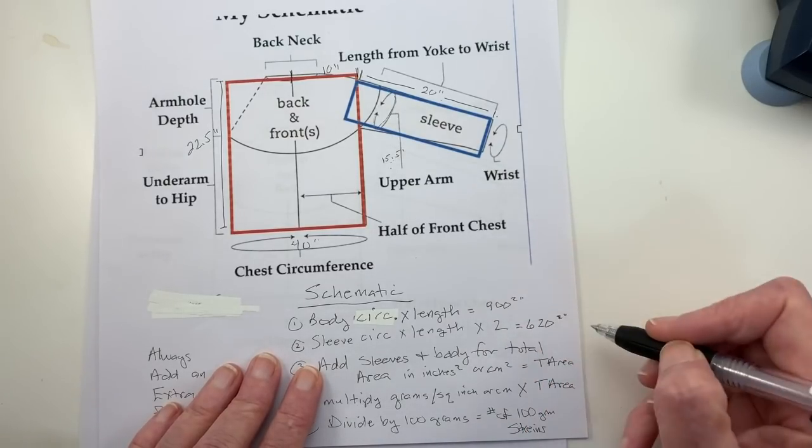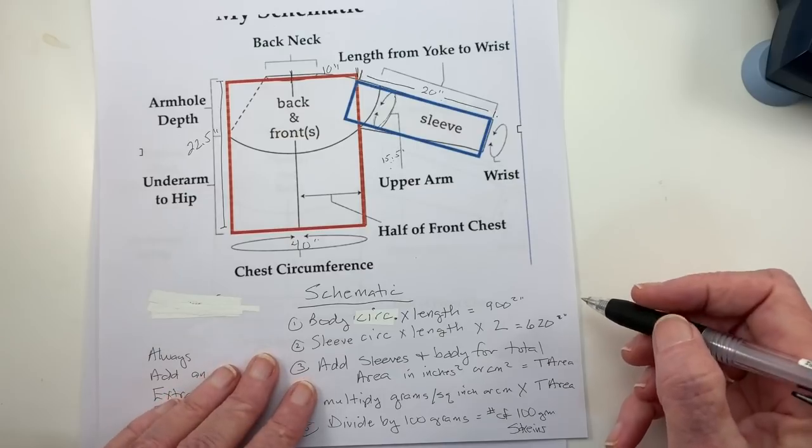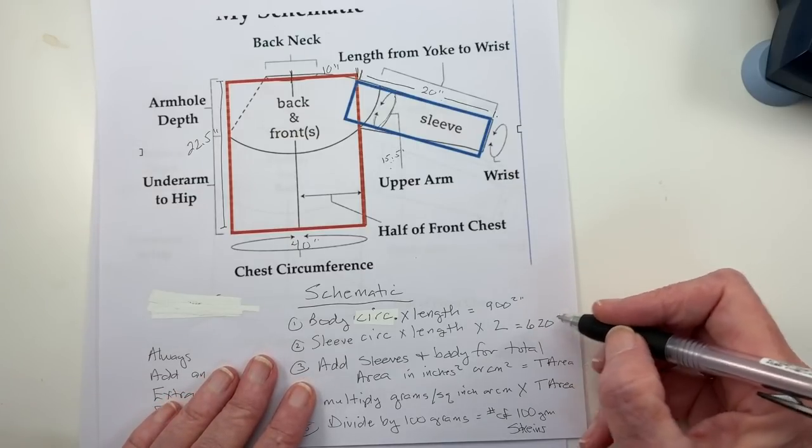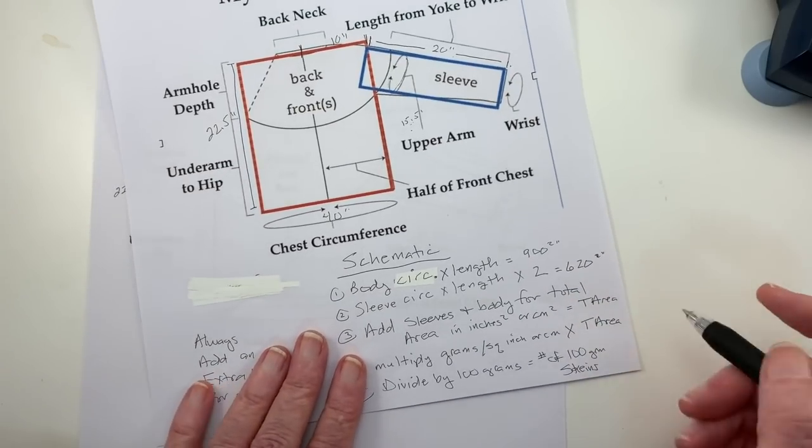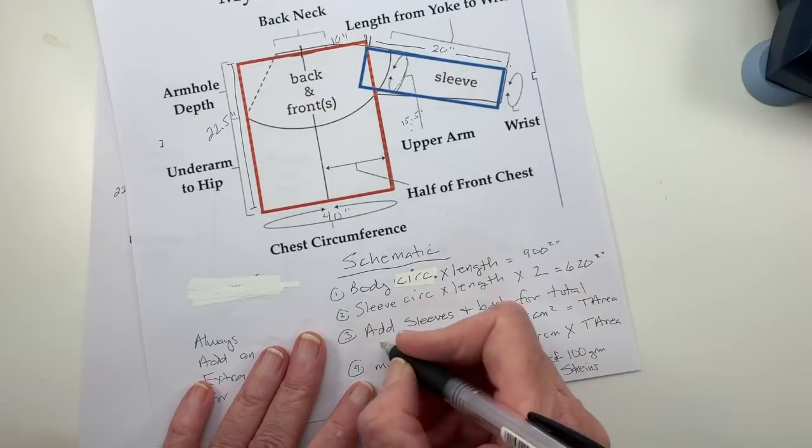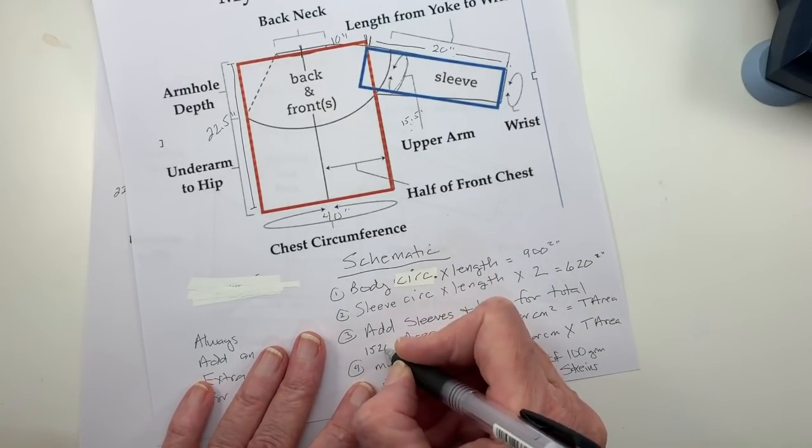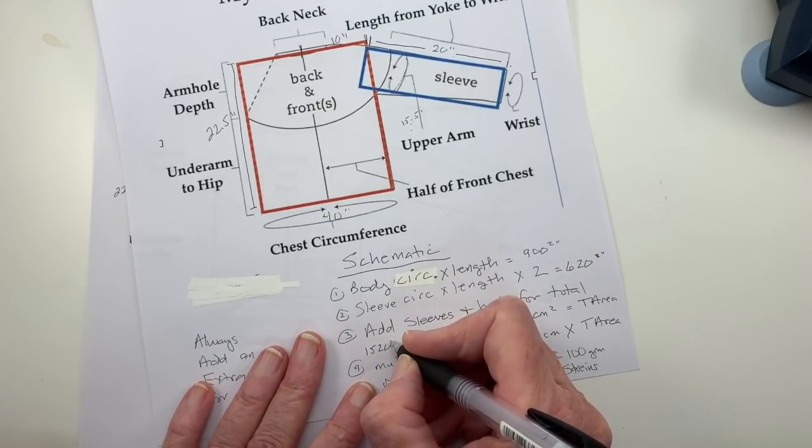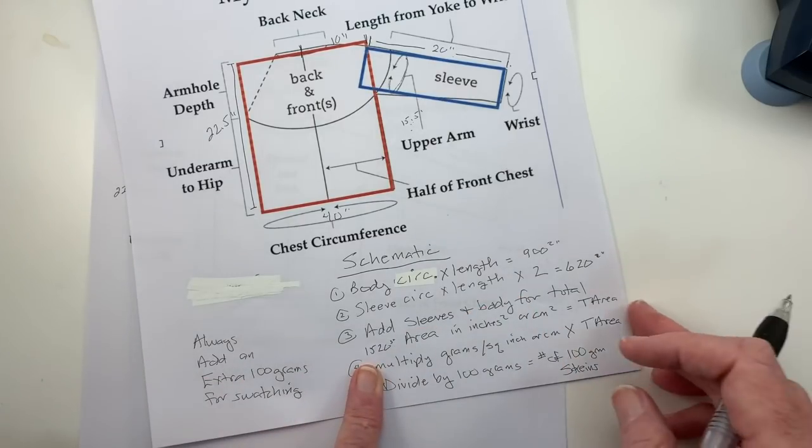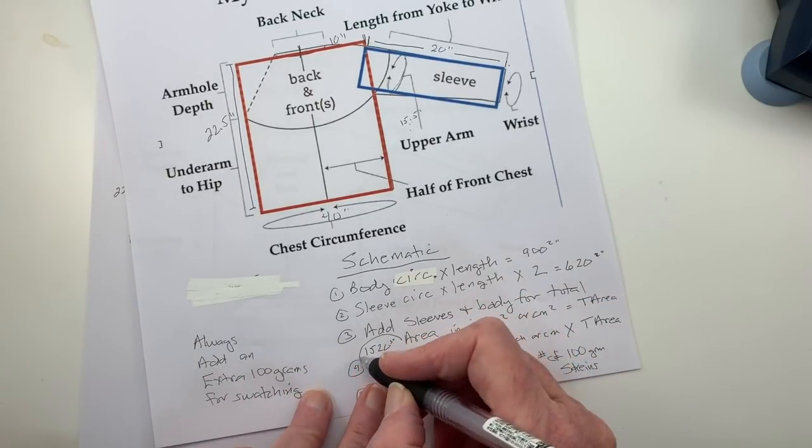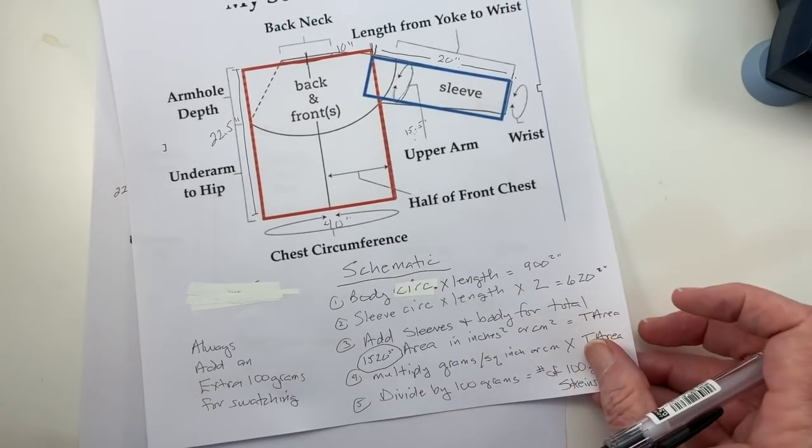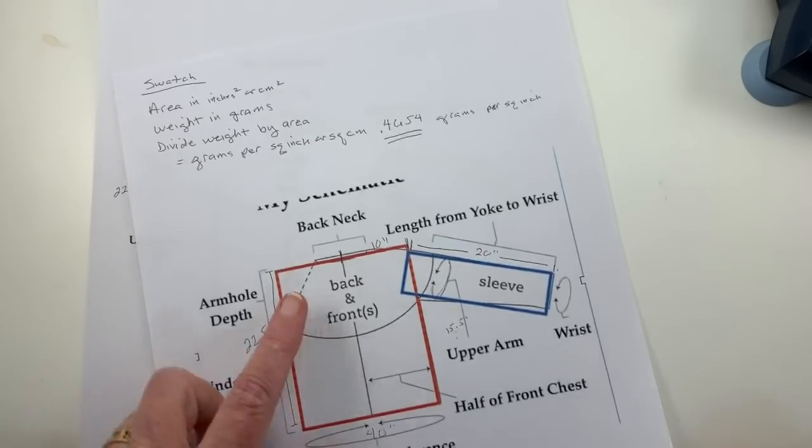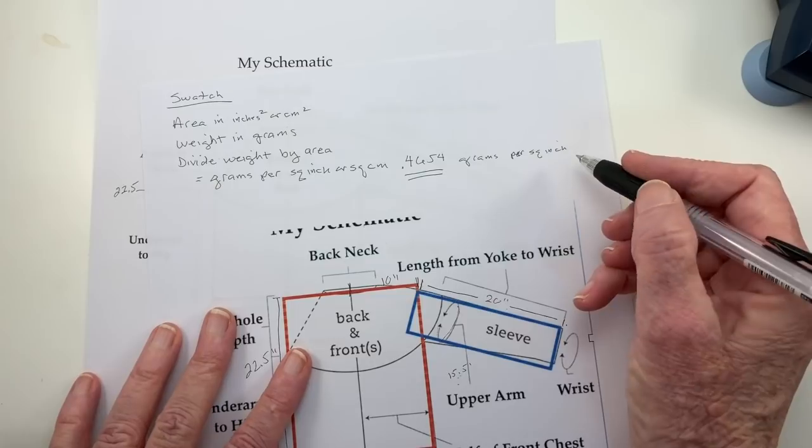Then I add those two numbers together. That gives me 1520 square inches. That's my total area is going to be 1520 square inches.